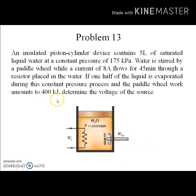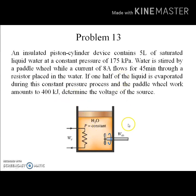The shaft work from the paddle wheel amounts to 400 kilojoules. Apart from this, electrical work is also done: a current of 8 amperes flows through a resistor placed in the water for 45 minutes. At the end of the process, one half of the liquid has evaporated, so the final state is 50% saturated liquid and 50% saturated vapor — meaning the quality of steam x = 0.5. We need to find the voltage of the source.